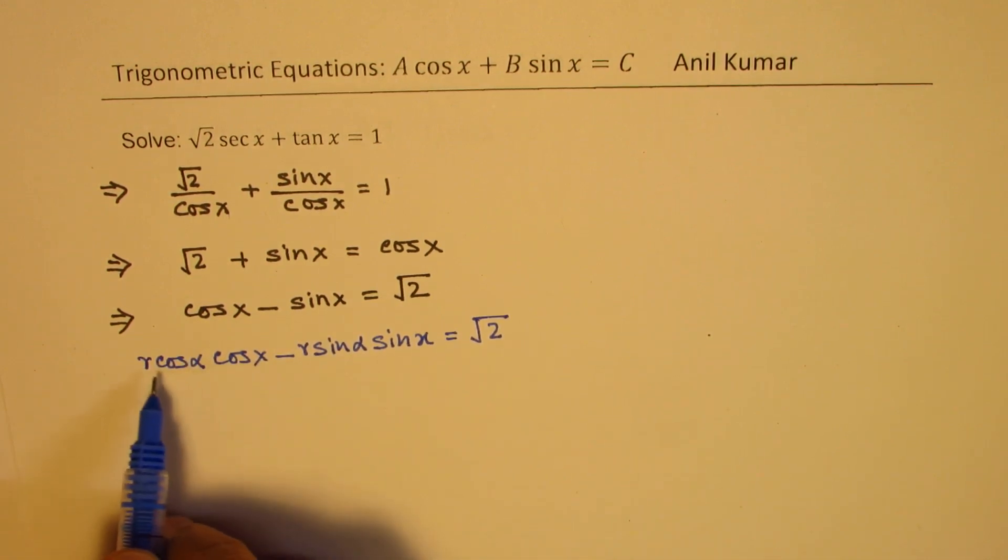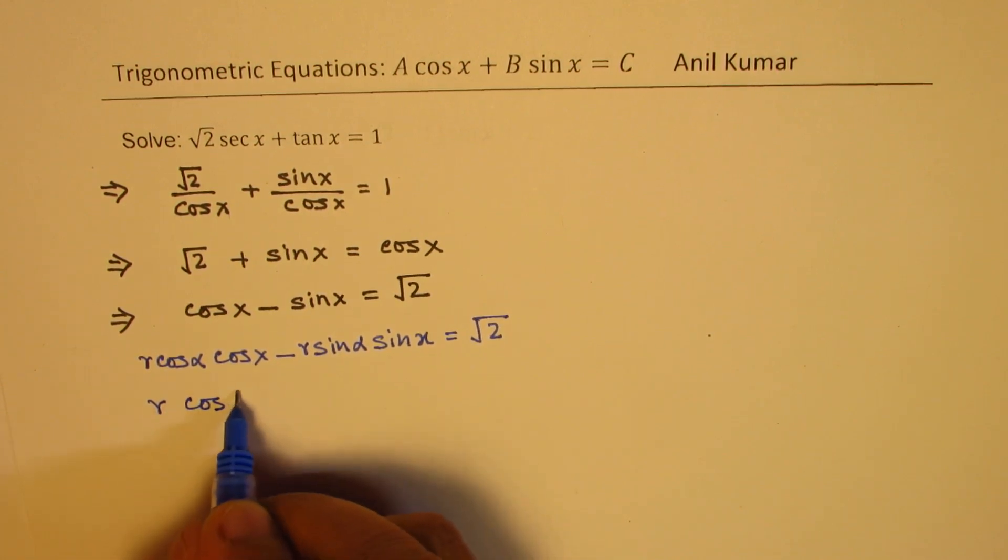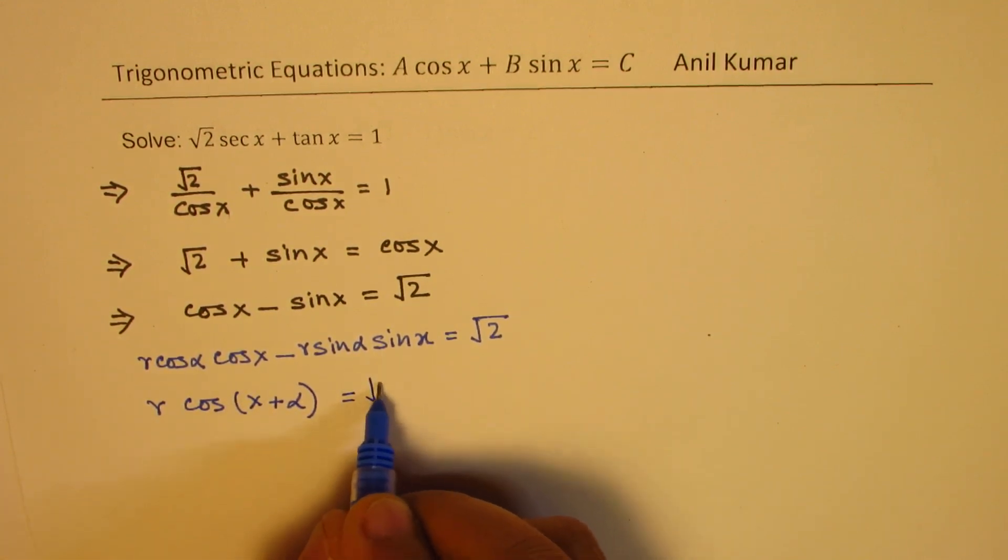Now here, the left hand side can be written as r of cos of x plus alpha, equal to square root of 2.